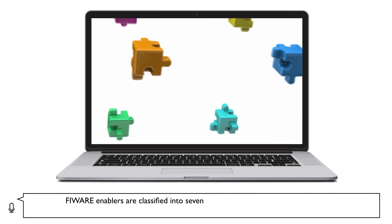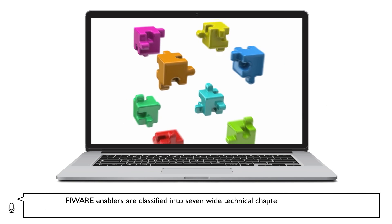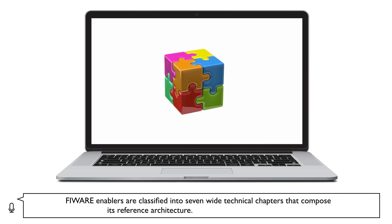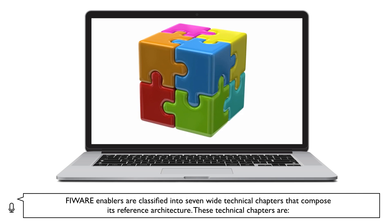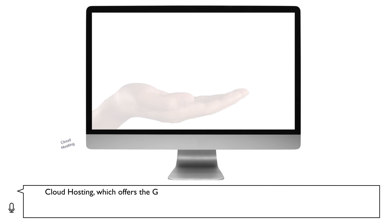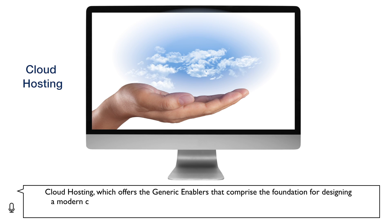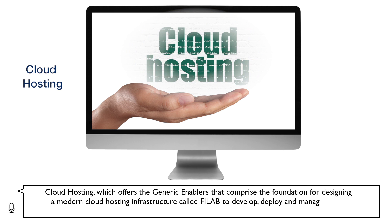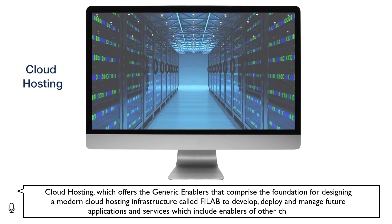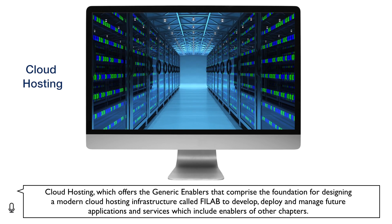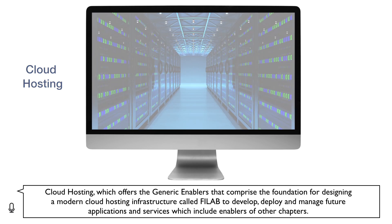FIWARE enablers are classified into seven wide technical chapters that compose its reference architecture. These technical chapters are: Cloud Hosting, which offers generic enablers that comprise the foundation for designing a modern cloud hosting infrastructure called FiLab to develop, deploy and manage future applications and services, which include enablers of other chapters.